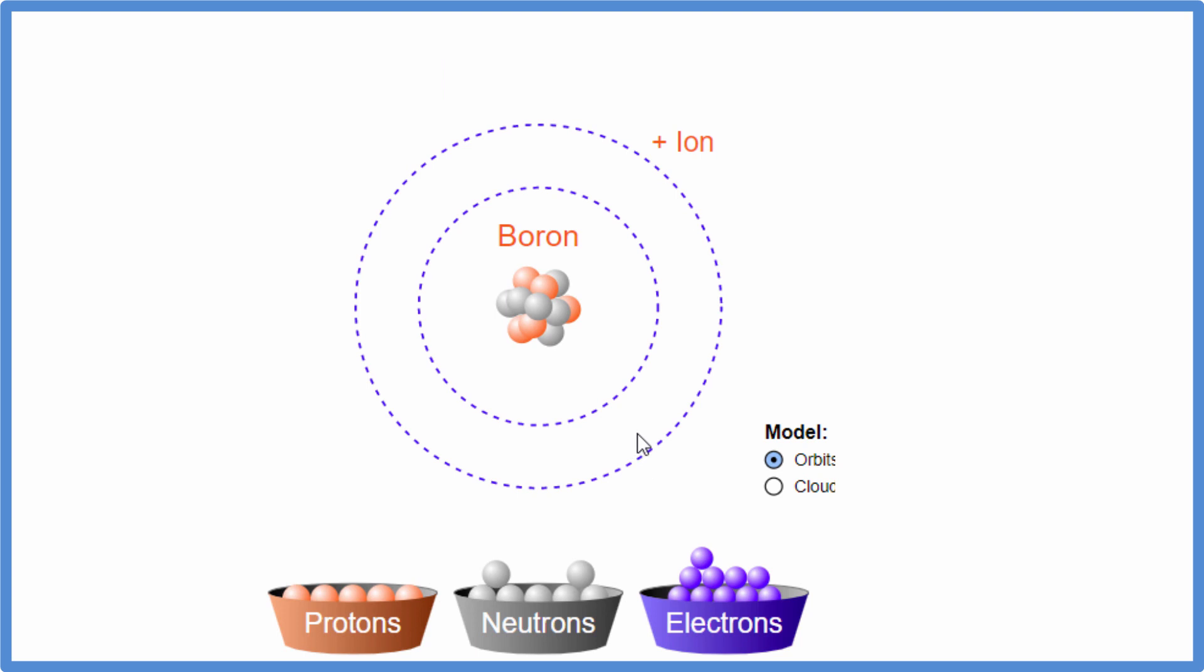Now we're going to add electrons. We said for neutral boron we had five, so there's one, two, this energy level is full here, and then we go to the next one, three, four, and five. So we've used our five electrons.